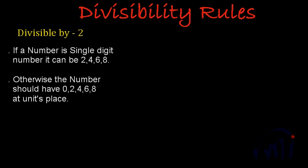And the second rule is otherwise the number should have 0, 2, 4, 6, or 8 at unit place. So it's very simple. If a number is either 2, 4, 6, or 8, they are divisible by 2.